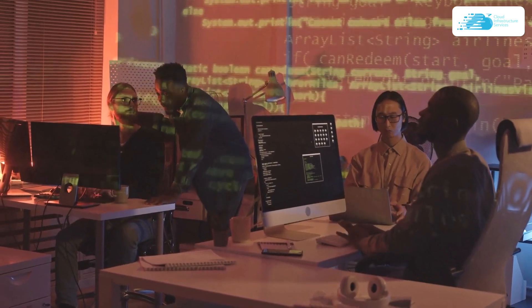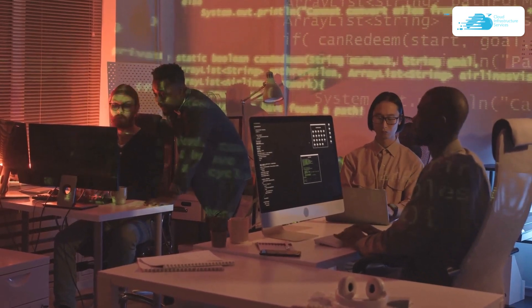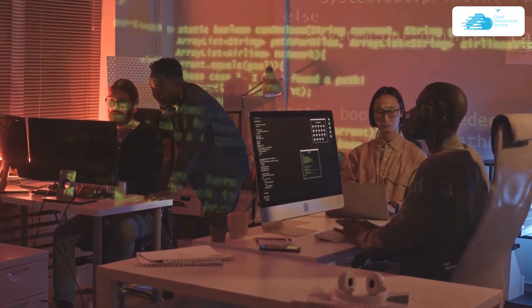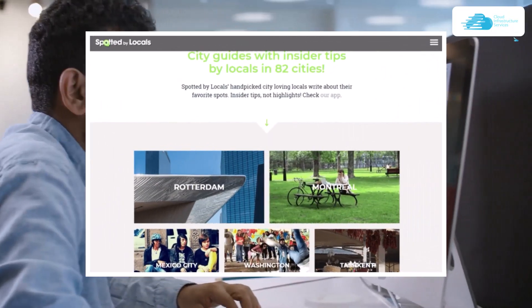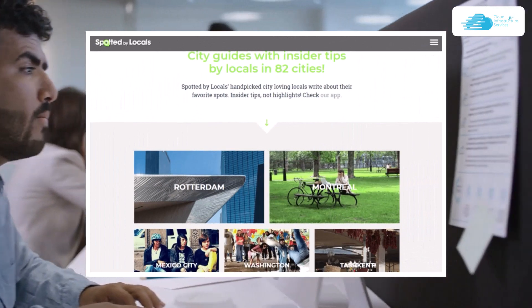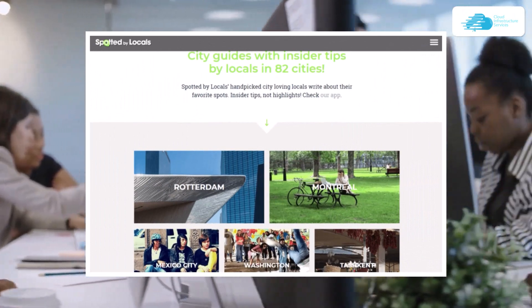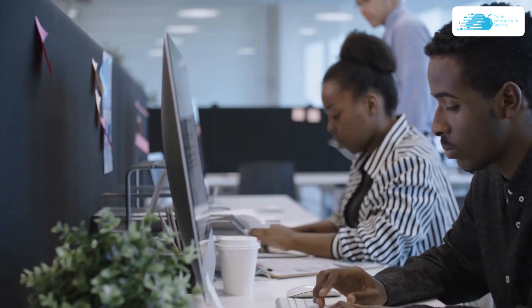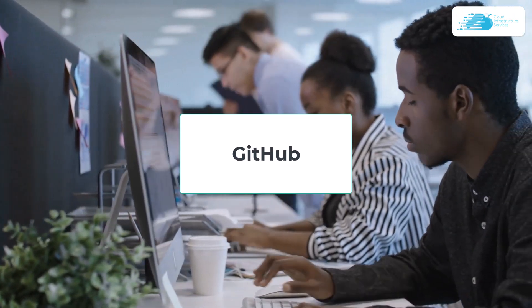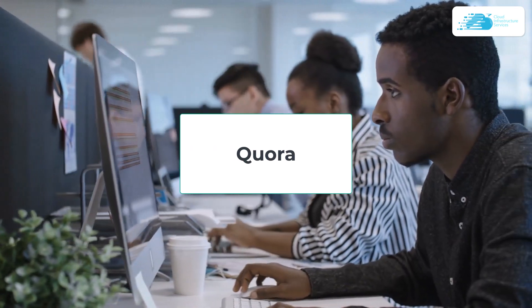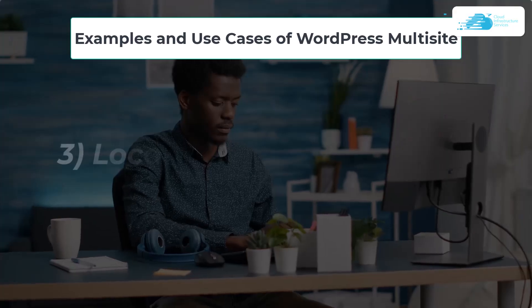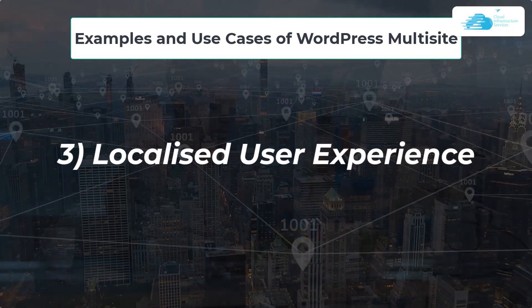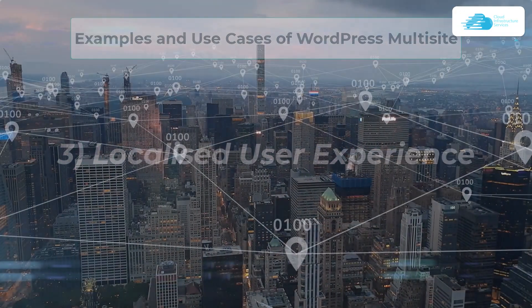Number two, we have the online community or forum. An online community or group of users can use multi-site to create a forum or niche websites. These websites can share the user experience in a particular niche, and many organizations use the multi-site feature for this purpose, such as Reddit, GitHub, Quora, and so much more.